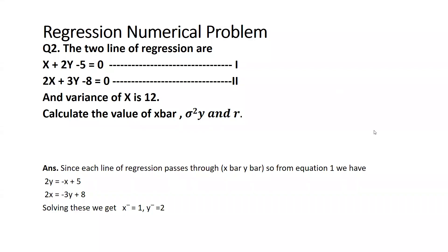Hi everyone. Today we will take one more new problem related to regression. When we have got two lines of regression, how we have to find out x̄, value of standard deviation and r, value of correlation. And when in the question statement variance of x has been given, that is 12, so how we have to solve this problem.